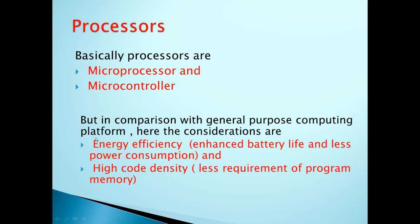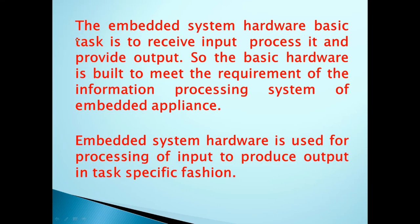Another consideration is high core density, which means a lower requirement of program memory. These are the two key considerations for embedded systems. The embedded system hardware is built to meet the requirement of the information processing system of embedded appliances, and it is used for processing input to produce output in a task-specific fashion.